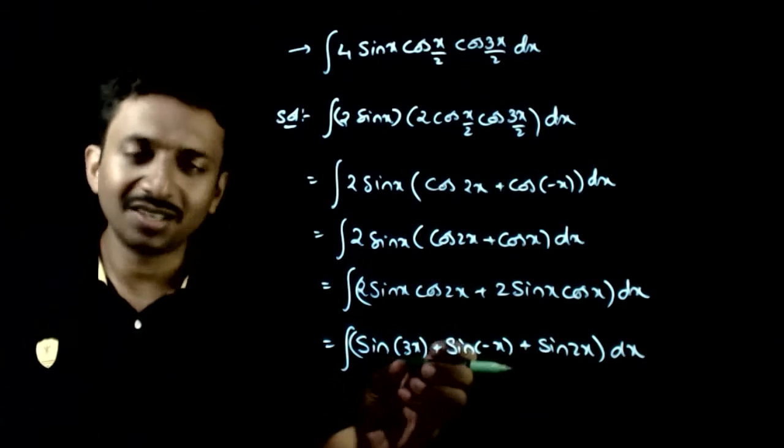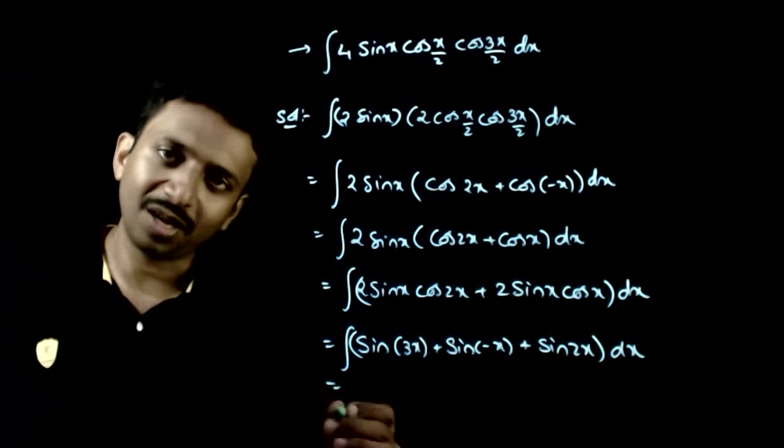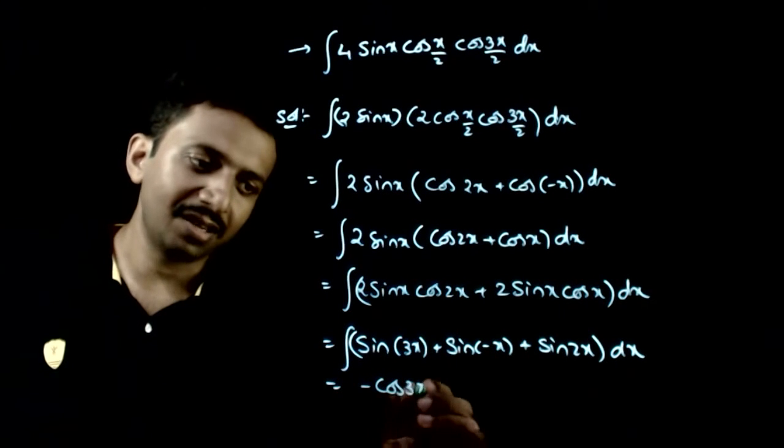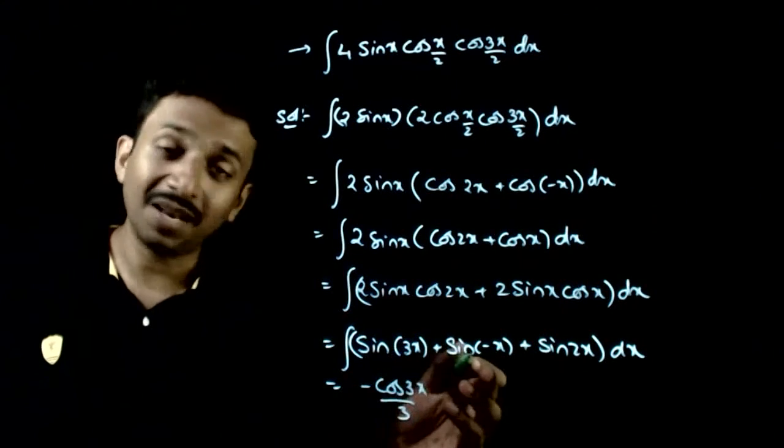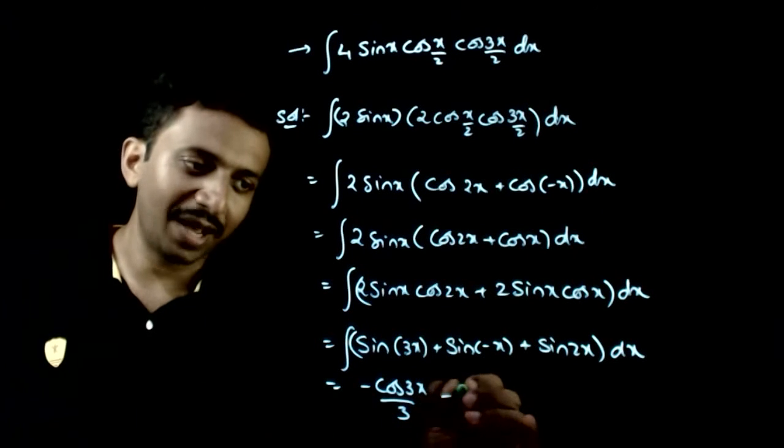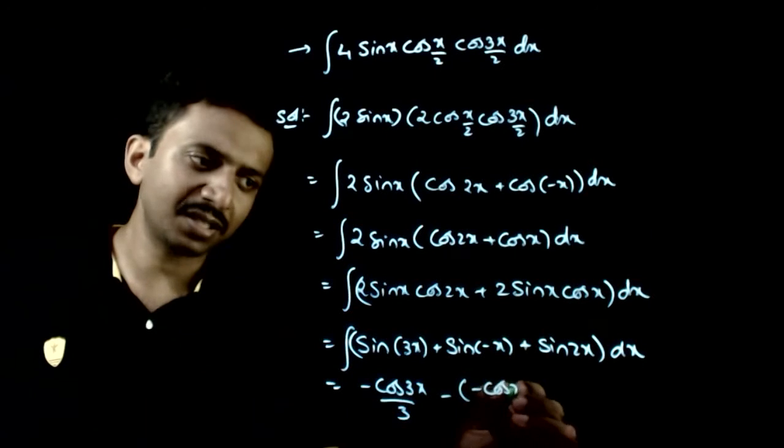Mostly the question is done. So, individually I integrate. Sin 3 x can be written as minus cos 3 x by 3. Sin minus x is nothing but minus of sin x, so minus of minus cos x.